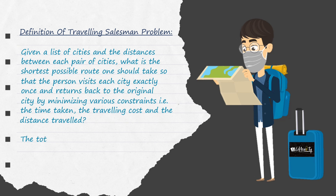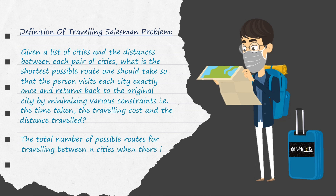The total number of possible routes for travelling between n cities, where there is an edge between every two cities, is n-1 factorial.